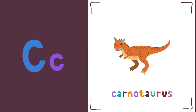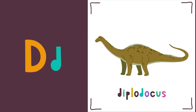C is for Carnotaurus. K, Carnotaurus. D is for Diplodocus. D, Diplodocus.